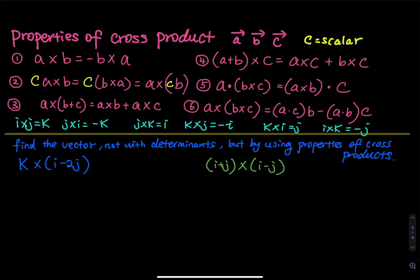Number four: (A plus B) cross C equals A cross C plus B cross C. Again, I think of that as distribution.